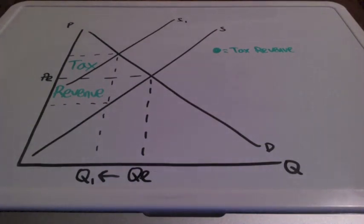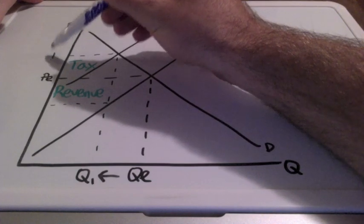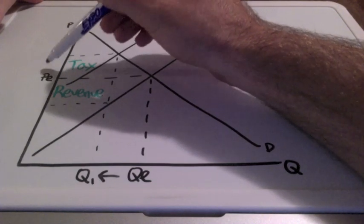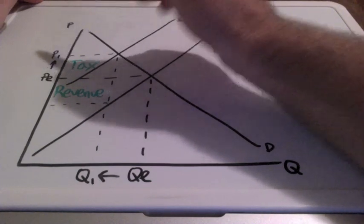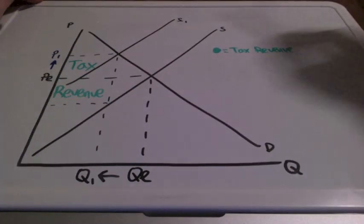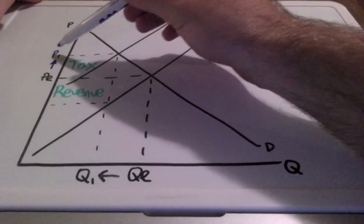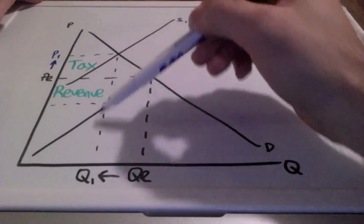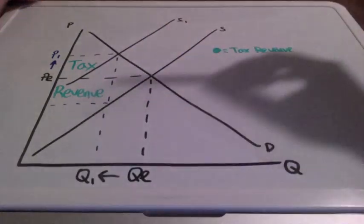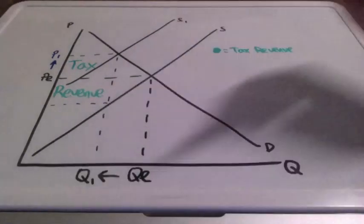So what does this mean for consumer and producer surplus? The price consumers have to pay is not what producers get to keep. We know that prices increase when we have taxes, meaning that when prices go up, quantity demanded could also go down.